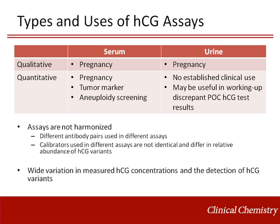Like many clinical laboratory tests, HCG immunoassays are not harmonized. Reasons for this lack of harmonization include the use of different antibody pairs between assays, as well as the use of calibrators that vary in relative concentrations of HCG variants. This results in wide variations in the measured concentration of HCG between assays, as well as variation in the detection of different HCG variants.